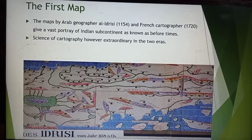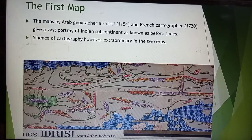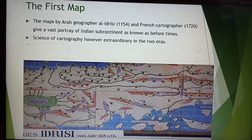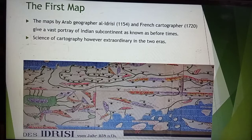The first map drawn by Al-Idrisi can also be found in your NCERT books. There are two types of maps — one of 1154 CE and the second of 1720 CE — and both maps have different types of understanding and different types of presentation. The map of India is much more precise in 1720 compared to 1154. Both maps show the same location but with a lot of variations.